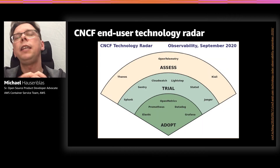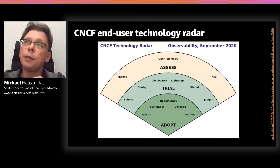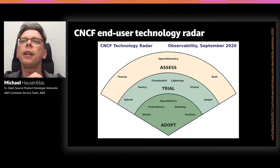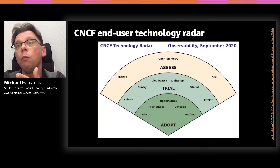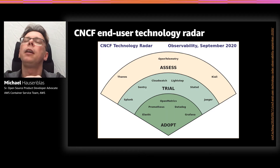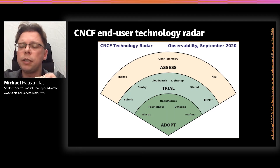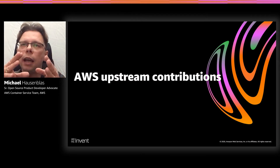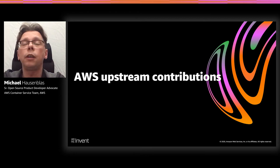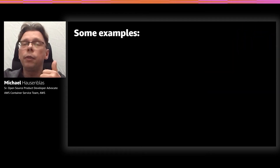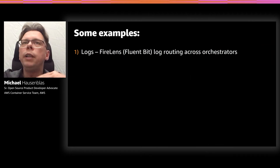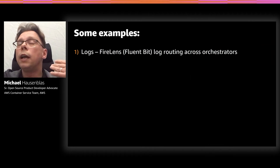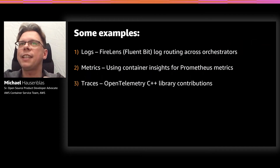In September, the CNCF published an end-user-based technology radar, essentially assessing these different projects in terms of maturity and uptake — I've included the link if you want to check it out. Now let's look at the upstream contributions specifically in the context of CNCF that we at AWS have been making. I'm structuring them along the three parts of telemetry: logs, metrics, and traces.